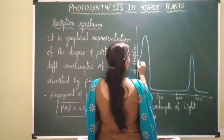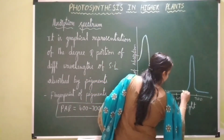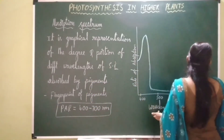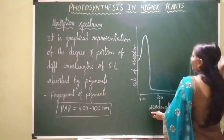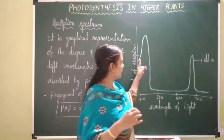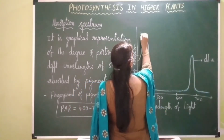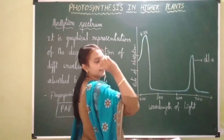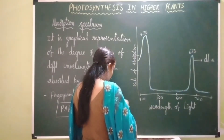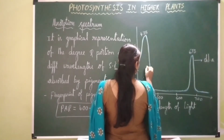Chlorophyll a is blue-green in color. It shows maximum absorption in both the blue region and red region. In the blue region it shows maximum absorption at 435 nanometers wavelength, and in the red region it shows maximum absorption at 673 nanometers wavelength.